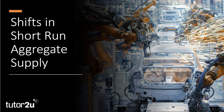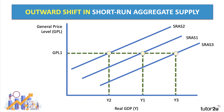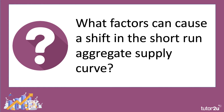Welcome back to another video. We're looking at aggregate supply in the macro economy, and in this video we're going to spend a few minutes focusing on the key causes of shifts in short-run aggregate supply. Here's our diagram — the aggregate supply curve in the short term can shift either to the left, an inward shift from SRS1 to SRS2, or an outward shift from SRS1 to SRS3. We're thinking about what might cause that to happen so you can analyze and apply this in exam questions.